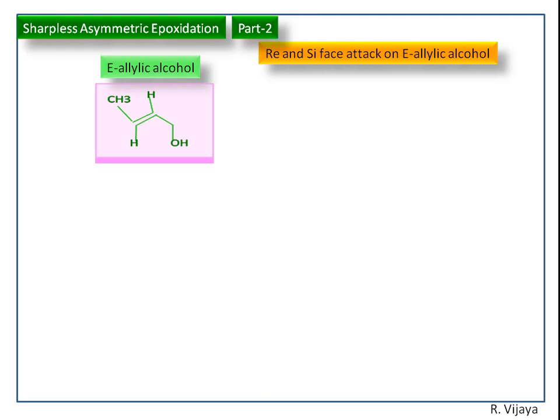Let us consider this E-allylic alcohol. This is the first sp2 carbon atom, this is the second sp2 carbon atom, and this is the top side view of the E-allylic alcohol.